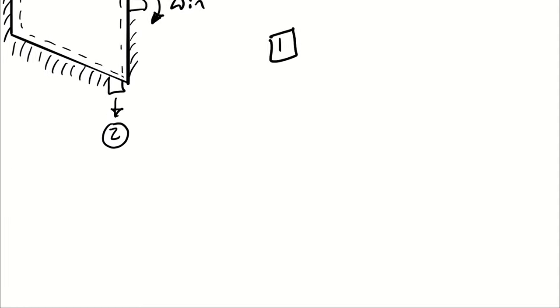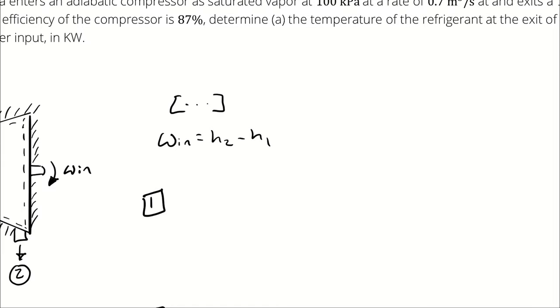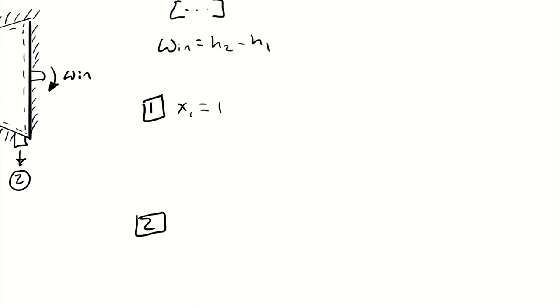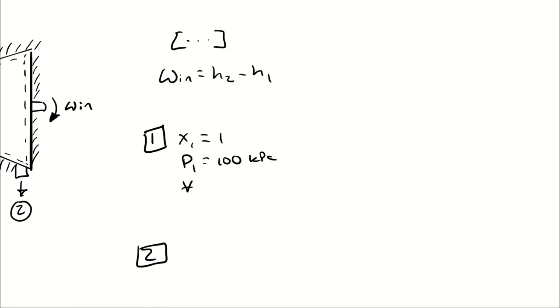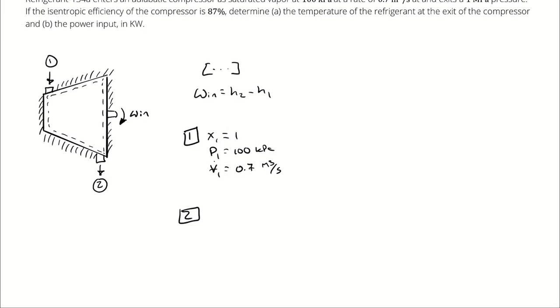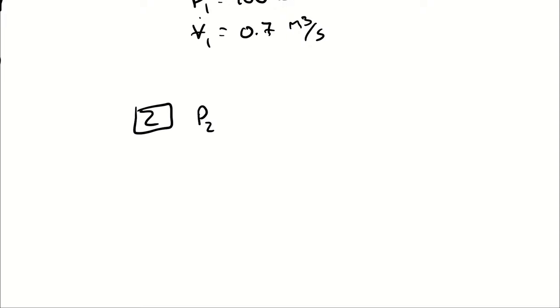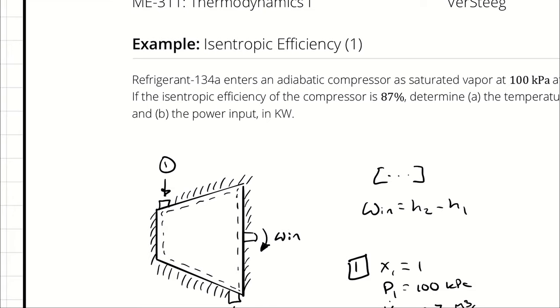I can define my inlet and outlet state points. I know that at the inlet I have a saturated vapor, which I will indicate by saying X1 is equal to 1, and I know a pressure, it's 100 kilopascals. Then I will write the total volumetric flow rate at state 1 is 0.7 cubic meters per second. At state 2, I know the exit pressure is 1 megapascal. And the other thing I know at state 2 is that the efficiency of this compression process is 87 percent. So what that means is eta to C is 0.87.